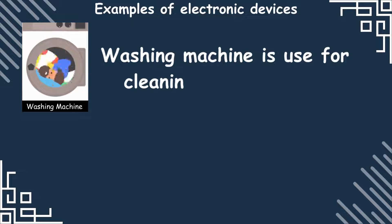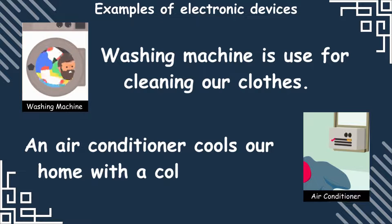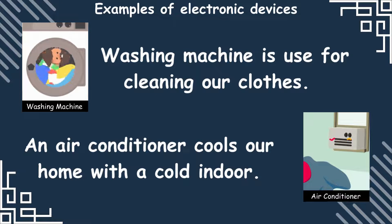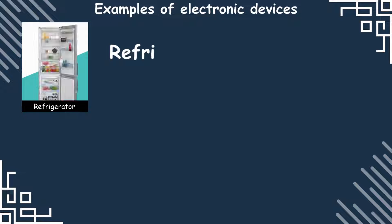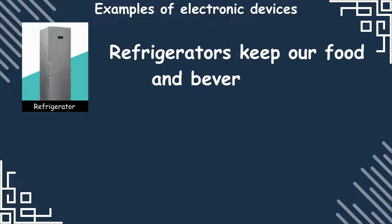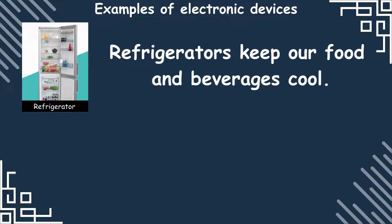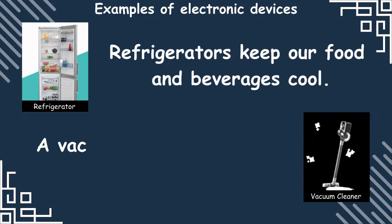Washing machine: A washing machine is used for cleaning clothes. Air conditioner: An air conditioner cools our home with cold air. Refrigerator: Refrigerators keep our food and beverages cool.